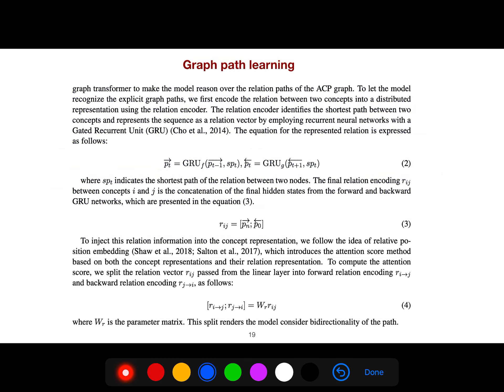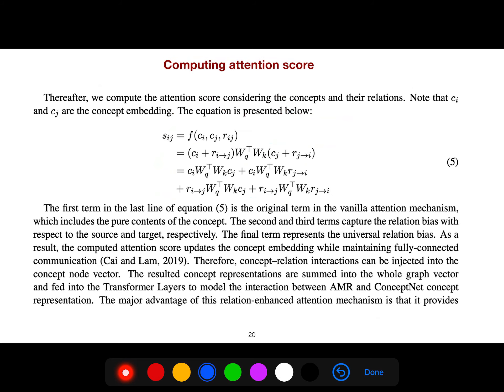This is the graph path learning equation. For the represented relation, we use gated recurrent unit, forward and backward, and then you concatenate it and then multiply it by a parameter matrix. You get the relation encoding. And we can compute attention score as well. So if we use this it becomes four terms, the first term, the second term, and it is explained here what they mean.